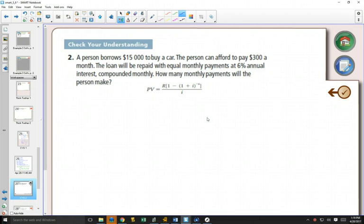So a person borrows $15,000 to buy a car. This is probably the closest example you could get to something that's going to happen in your life in the next little bit. You want to borrow $15,000 to buy that car. You can afford to pay $300 a month. So there goes that retirement party you planned before because now you can't retire because you're paying off your car.